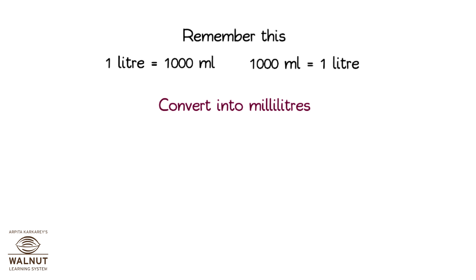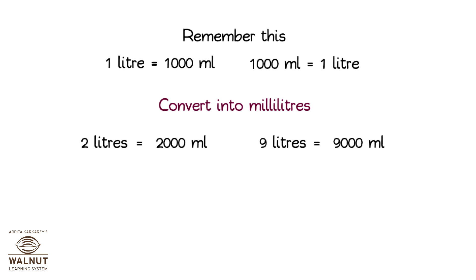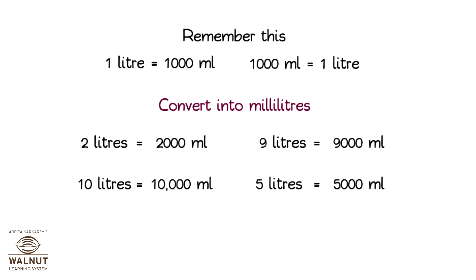Convert into millilitres: 2 litres is equal to 2000 millilitres. 9 litres is equal to 9000 millilitres. 10 litres is equal to 10,000 millilitres. 5 litres is equal to 5000 millilitres.